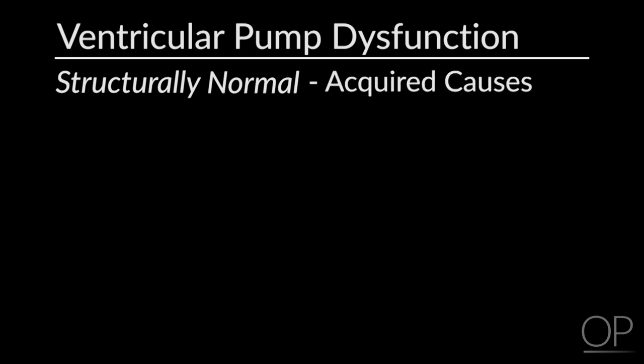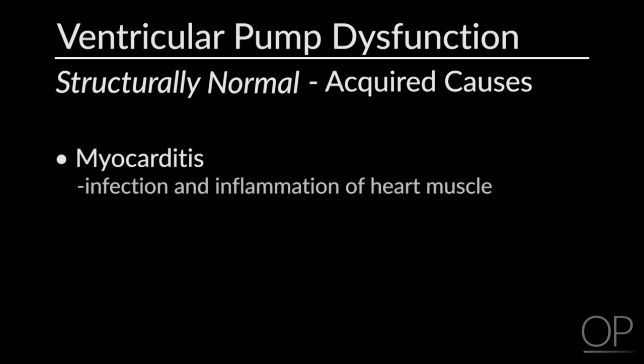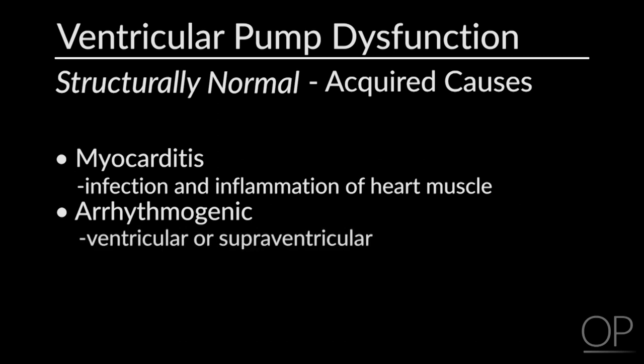There are also acquired causes of ventricular dysfunction, with myocarditis being the most common. Myocarditis is an infection and inflammation of the myocardium. It can be due to viral, bacterial, or rheumatological abnormalities, and there are also certain immunological features that play a role. Additionally, persistent arrhythmias, such as ventricular or supraventricular arrhythmias, can cause abnormalities and dysfunction of the myocardium that persist even after cessation of the arrhythmia.